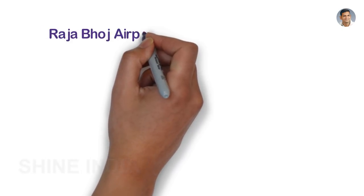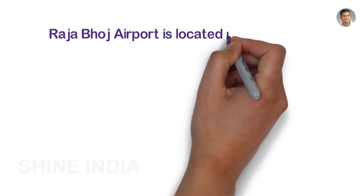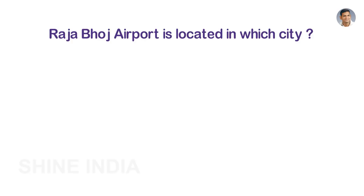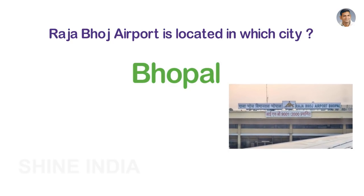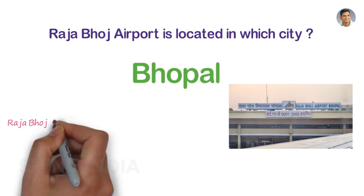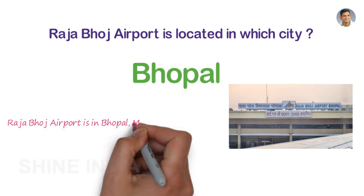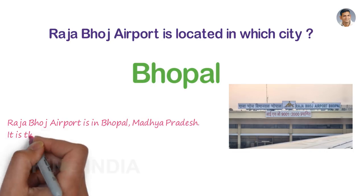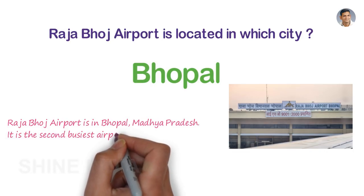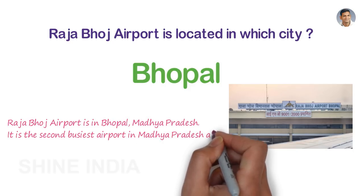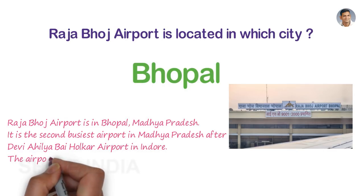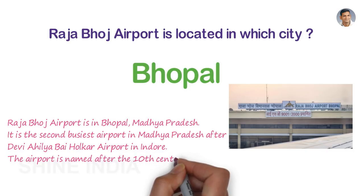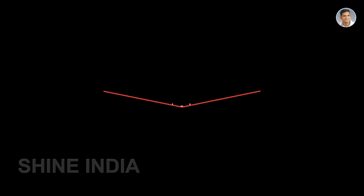Rajabhoj Airport is located in Bhopal city of Madhya Pradesh. It is the second busiest airport in Madhya Pradesh after Devi Ahilya Bhai Holkar Airport in Indore. The airport is named after the 10th century Paramara king Rajabhoj.